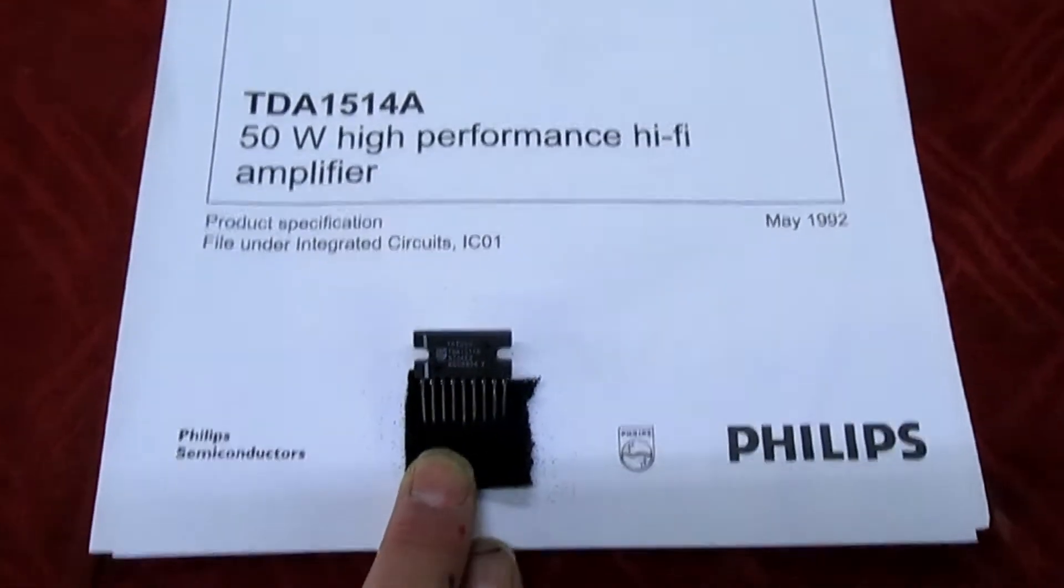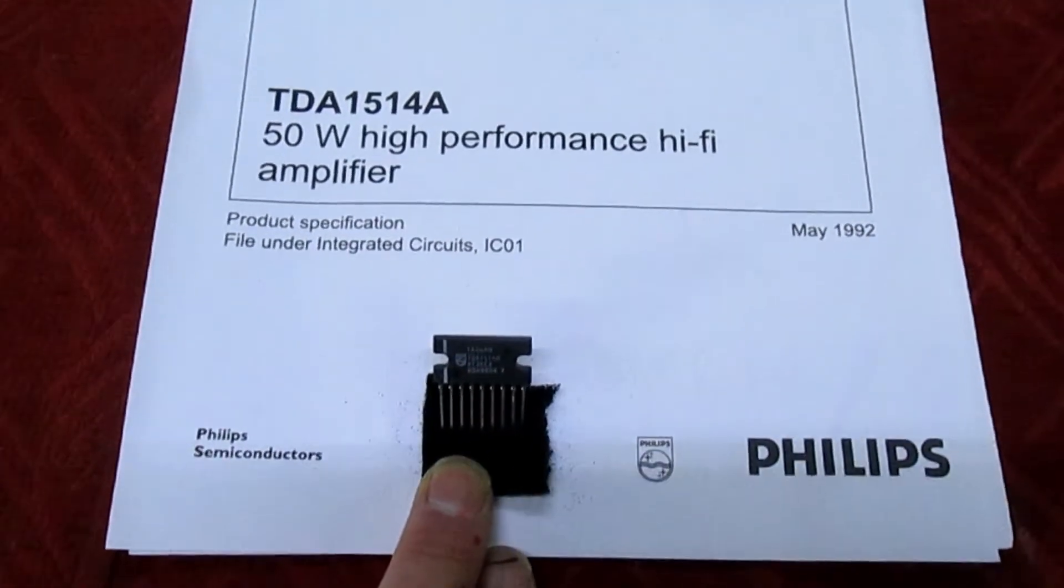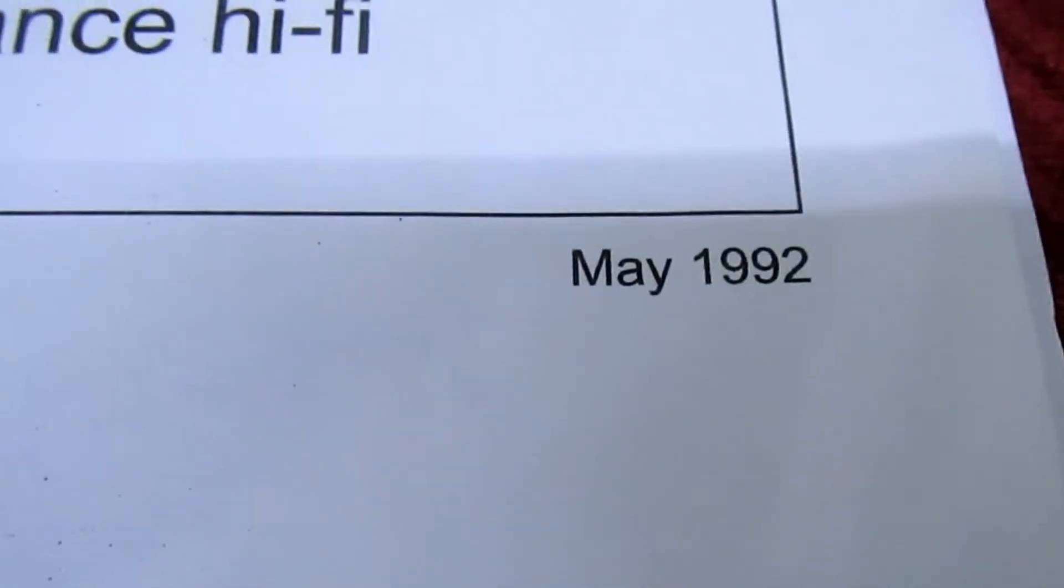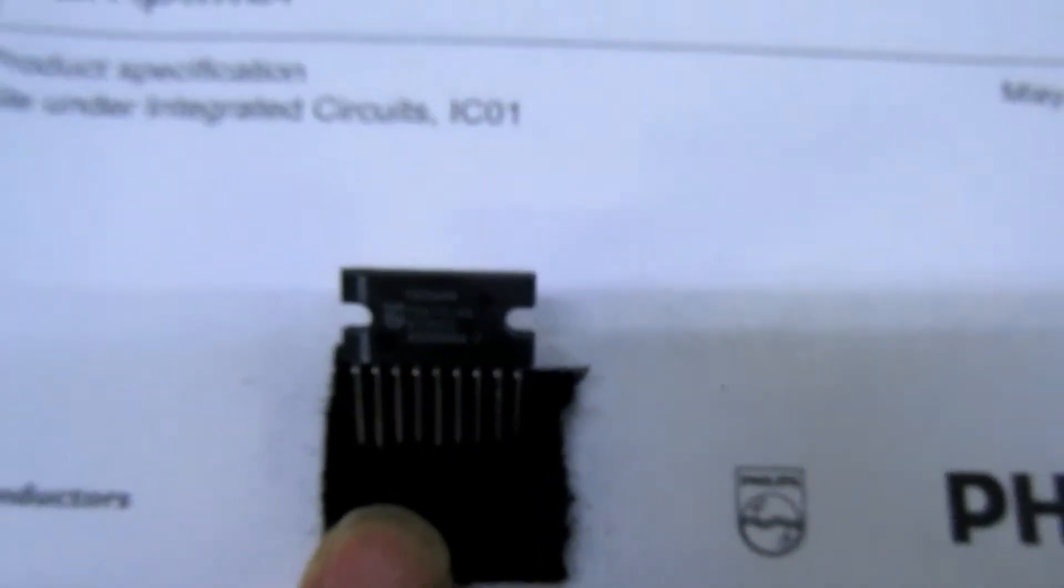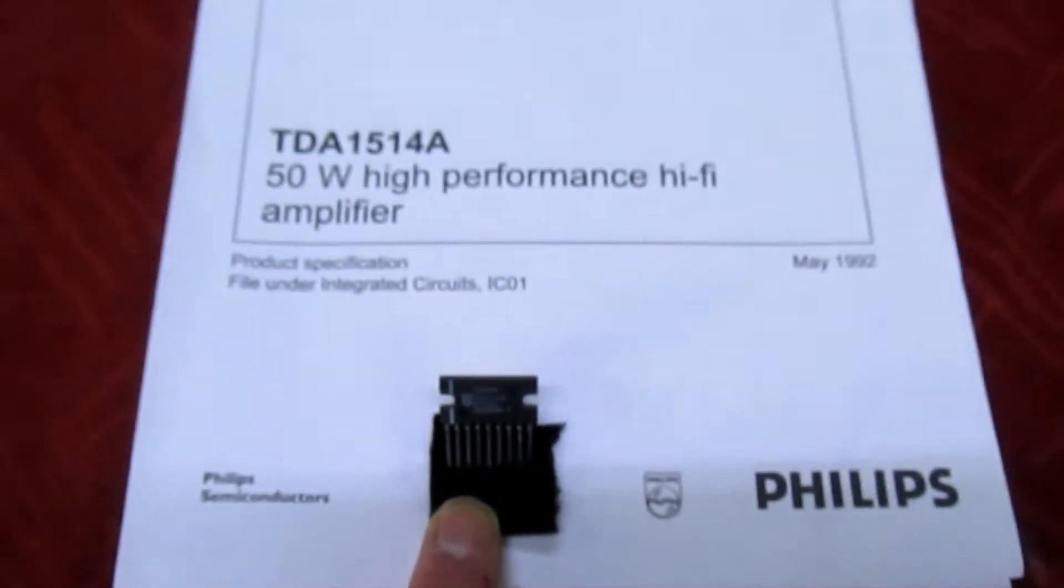The big difficulty is actually finding an IC that's not a fake or counterfeit or sanded down one. If you look at the data sheet, the IC was first produced in May 1992, so it's been out of production for more than 20 years.